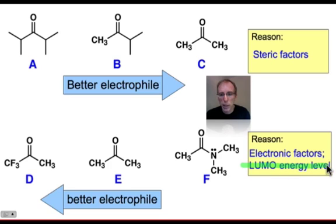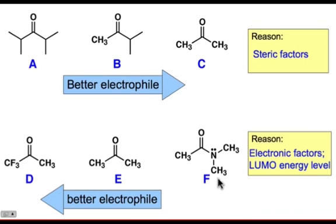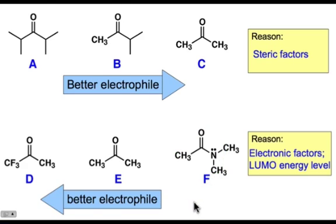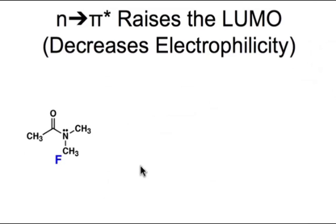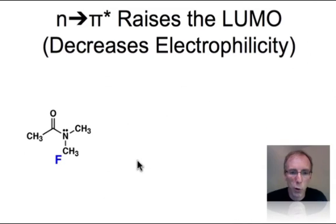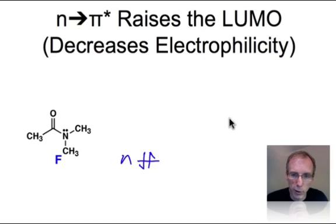What's changing in this series isn't so much the size, but mainly an electronic factor — specifically, we're changing the LUMO level. In molecule F, we're raising the LUMO and making it inaccessible to the incoming nucleophile, while we're lowering the LUMO in molecule D. Let's draw a molecular orbital diagram for this amide so we can see how the n to π* interaction raises the π* LUMO.